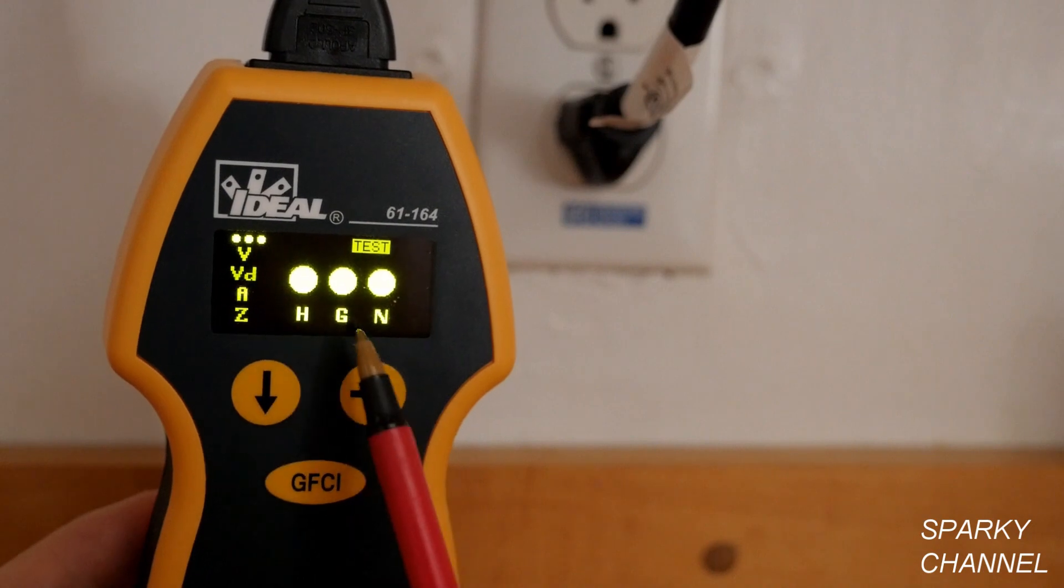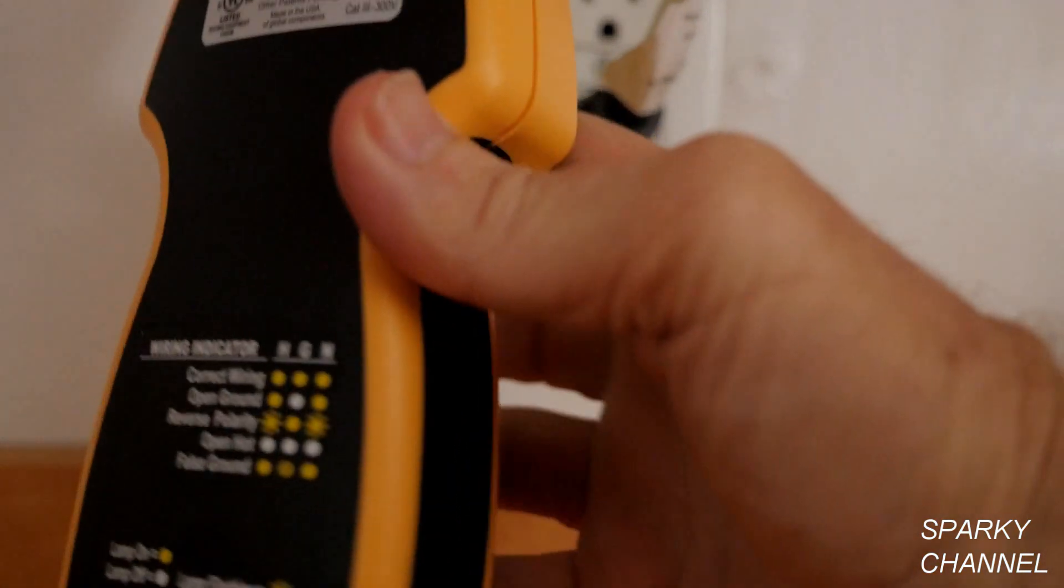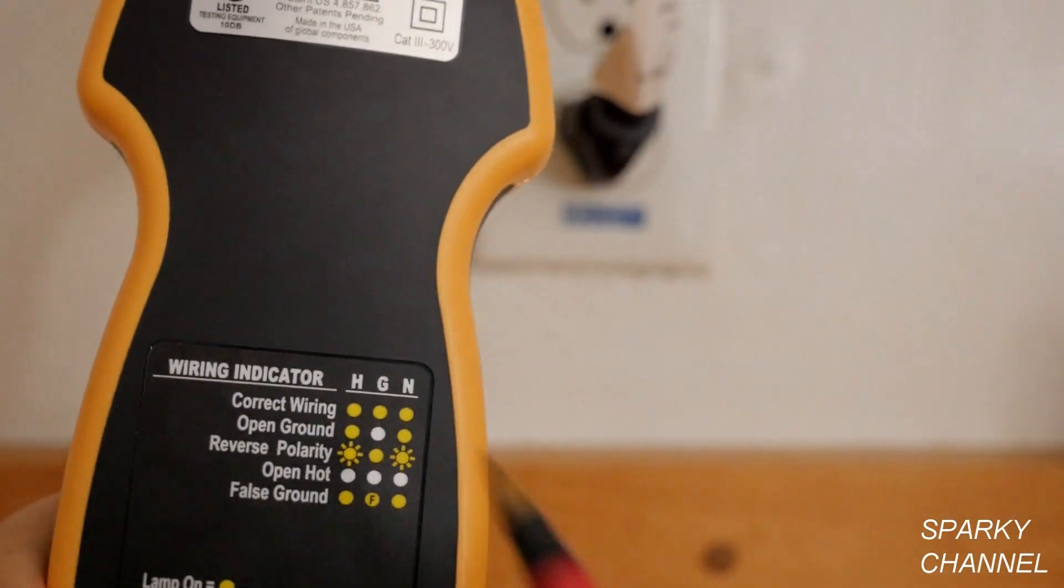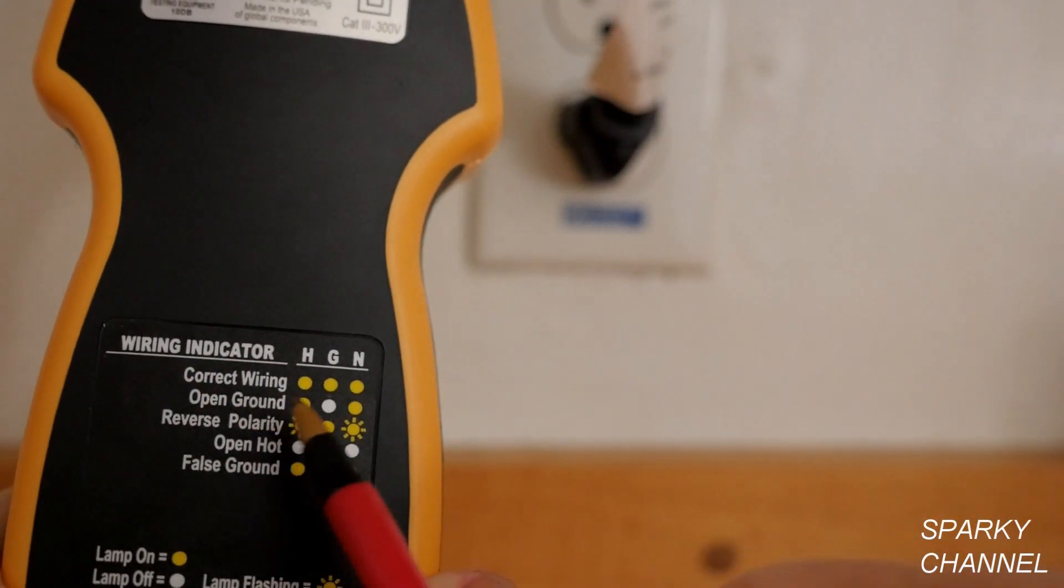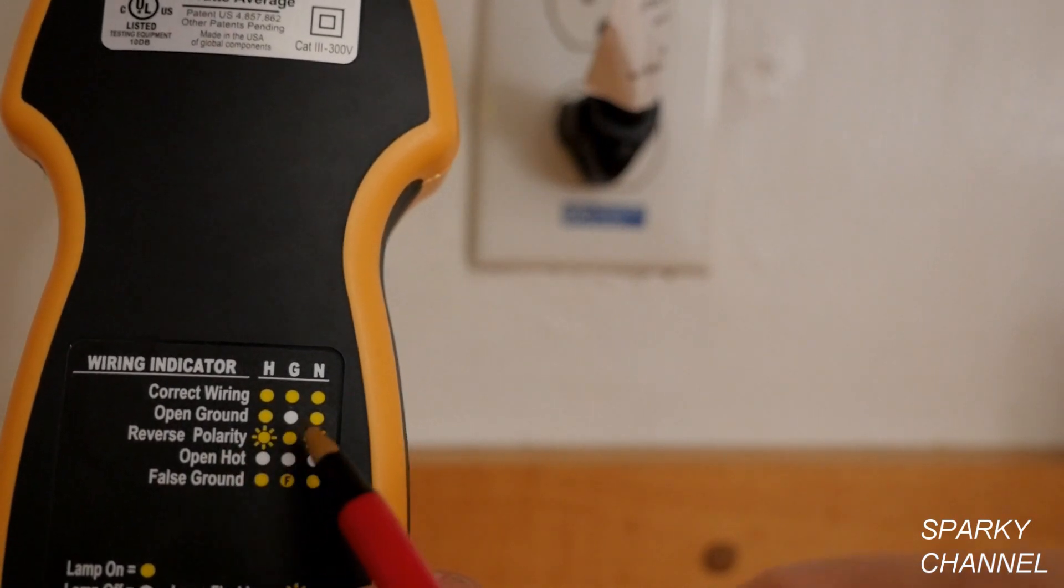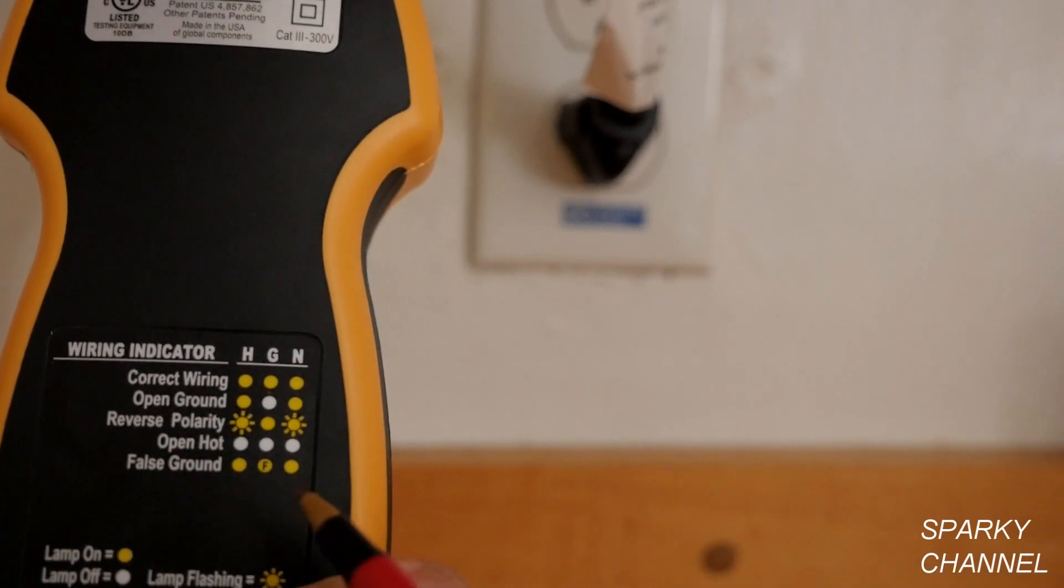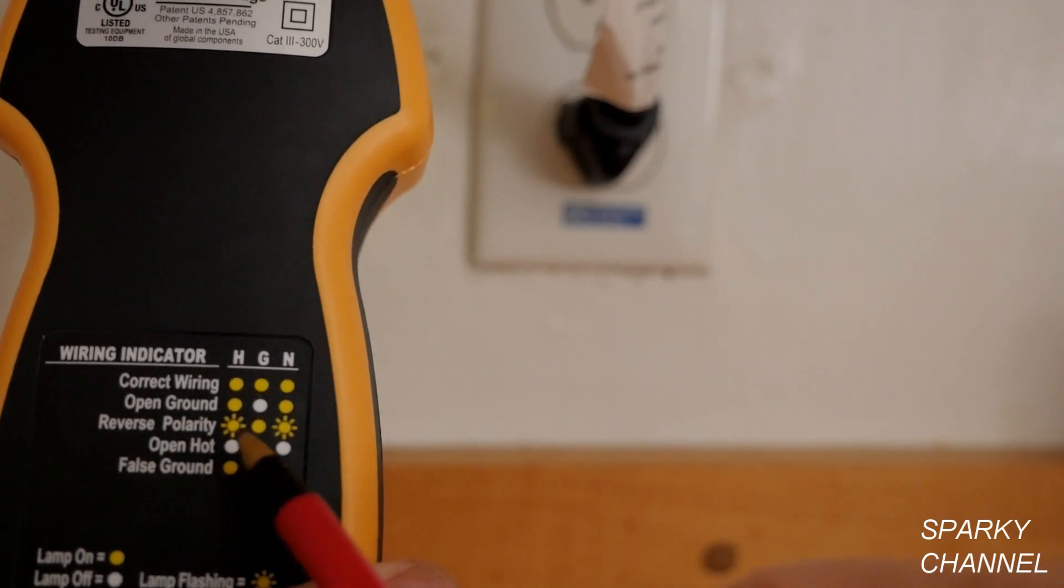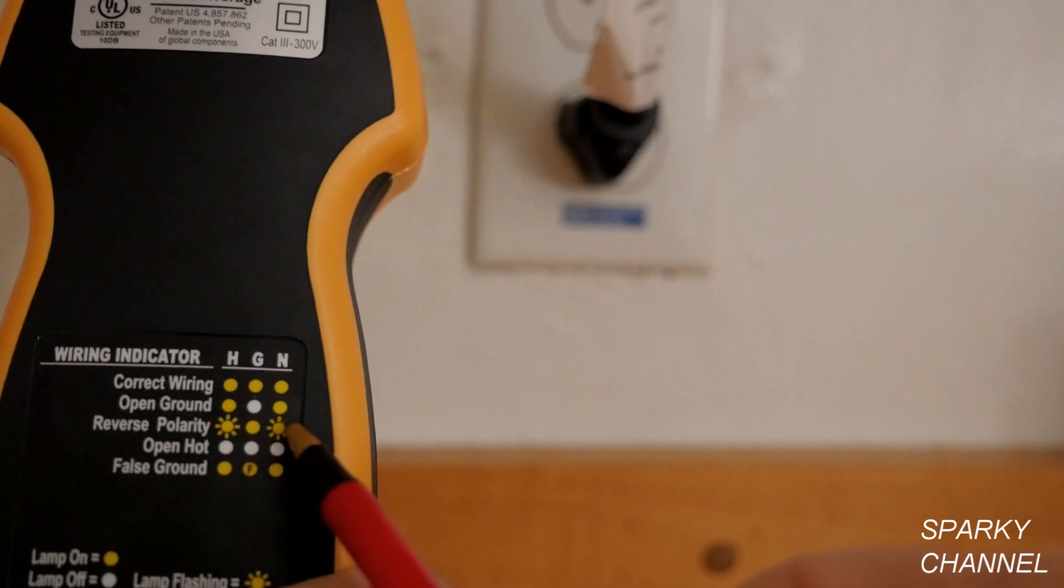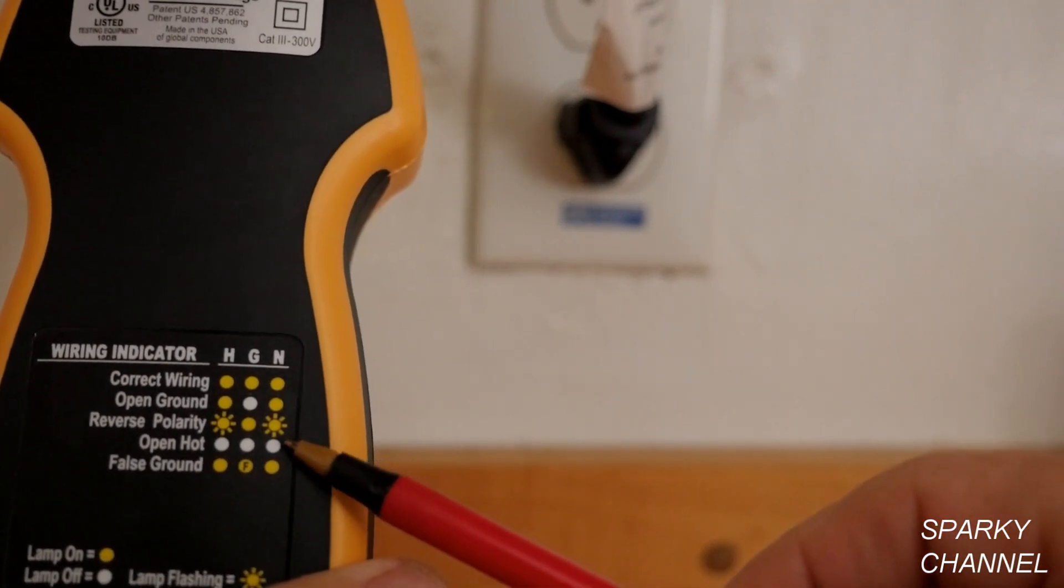This is hot, ground, and neutral. If you check the table on the back, you'll see under wiring indicator, correct wiring, all three of the lights are lit. If the ground light is not lit but the other two are, that means open ground. If all three lights are lit but the hot and neutral are flashing, that means reverse polarity. No lights at all means open hot.